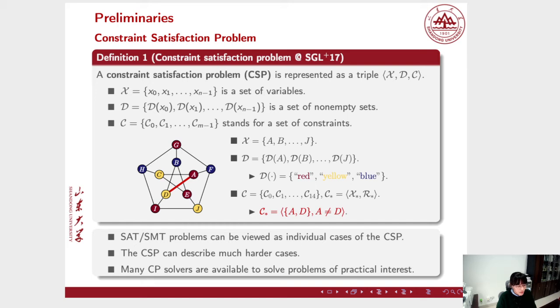The Boolean satisfiability problem and the satisfiability modulo theories can be viewed as individual cases of the CSP. But the CSP can describe much harder cases, which may not be expressible with some of these relatively simpler instances. Although solving a CSP on a finite domain is an NP-complete problem, many CSP solvers are available to solve problems of practical interest.